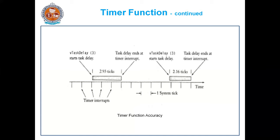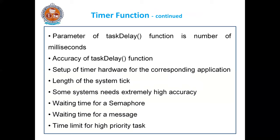This is how the timer function is executed in embedded systems. When using timer functions, here are certain observations. The parameter of the task delay function is the number of milliseconds. Many RTOS systems take the number of system ticks as a parameter. The length of time represented by each system tick is something you can usually control when the system is set up. The next question is how accurate the delay produced by the task delay function is.